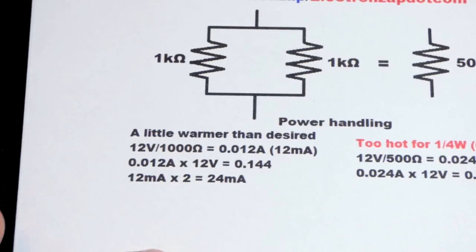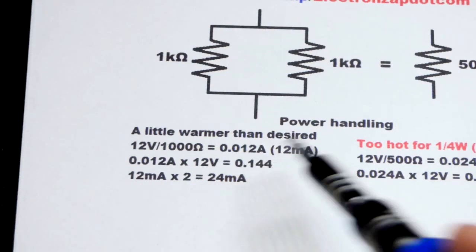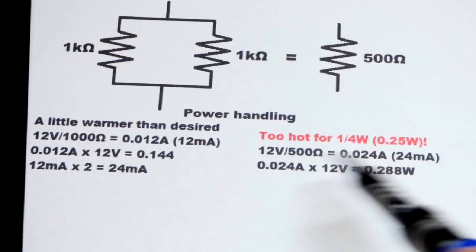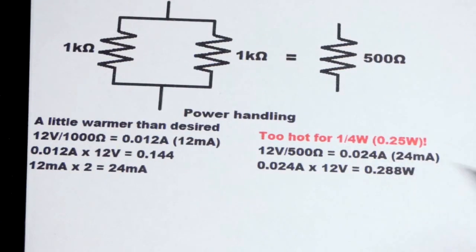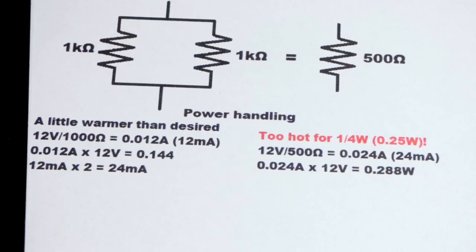You multiply it, that's 0.144 watts, which is a little higher than you want, but it's much better than going way over the rated value of most resistors, which is a quarter watt, 0.25 watts.